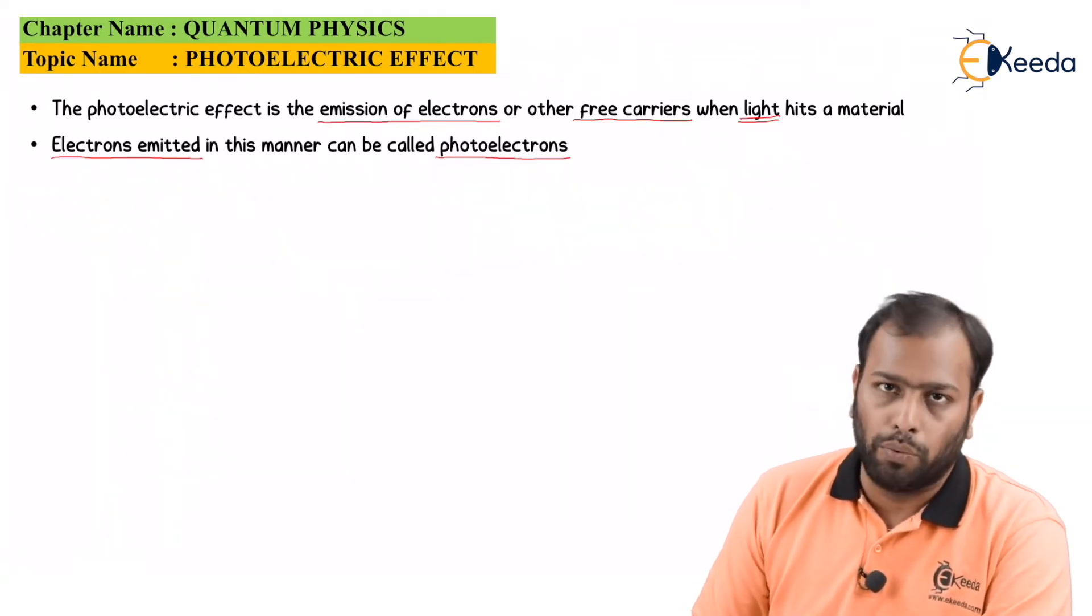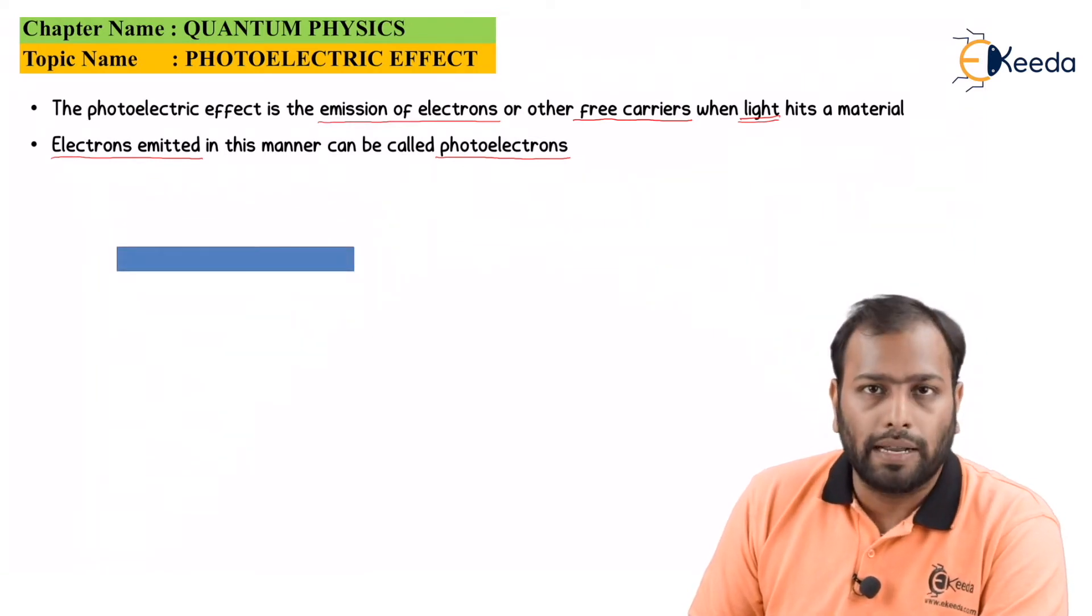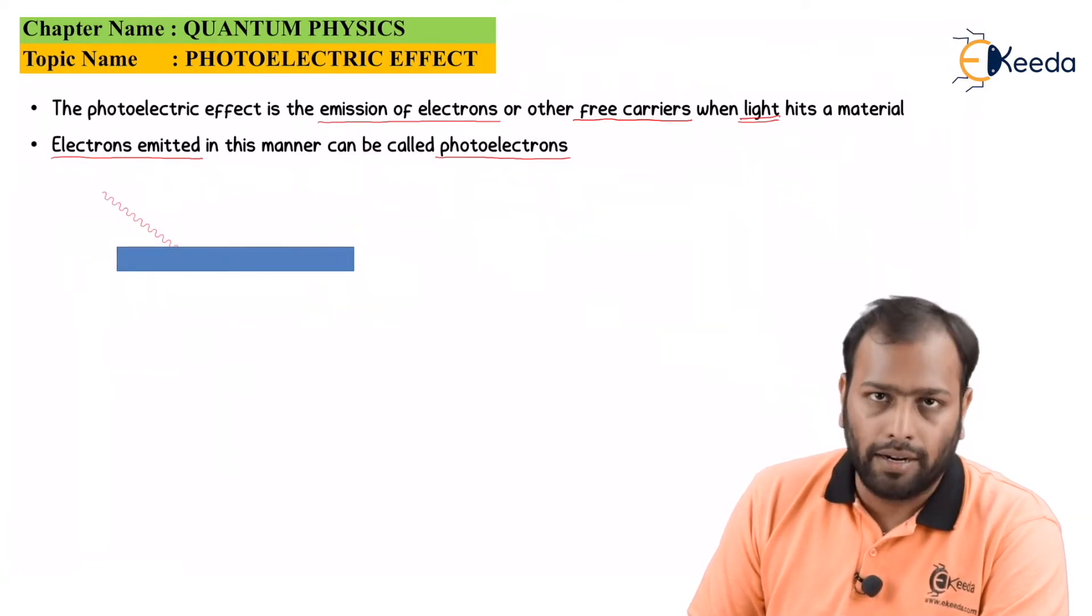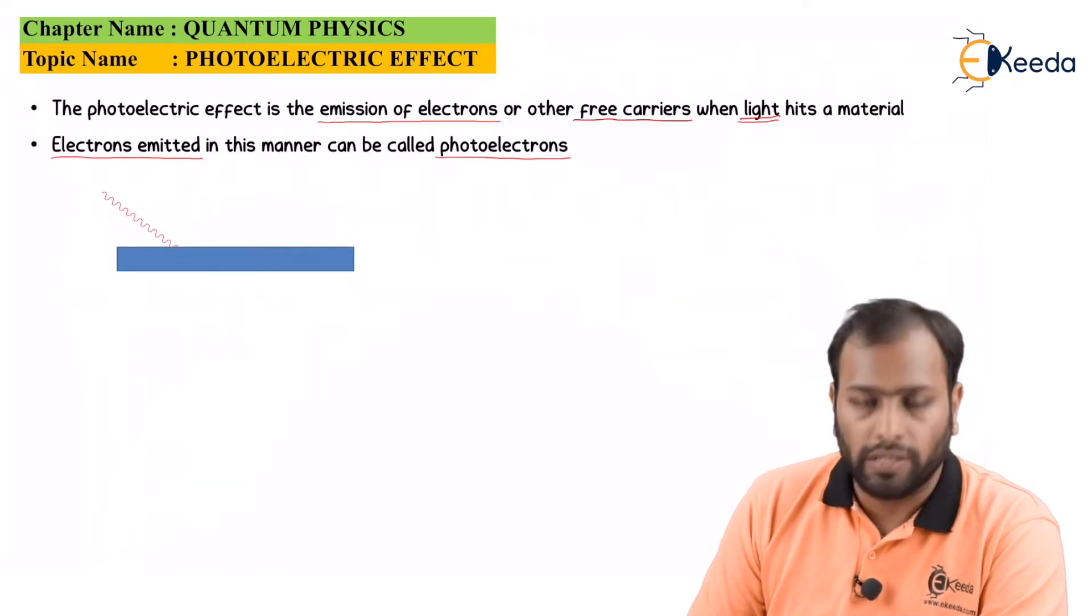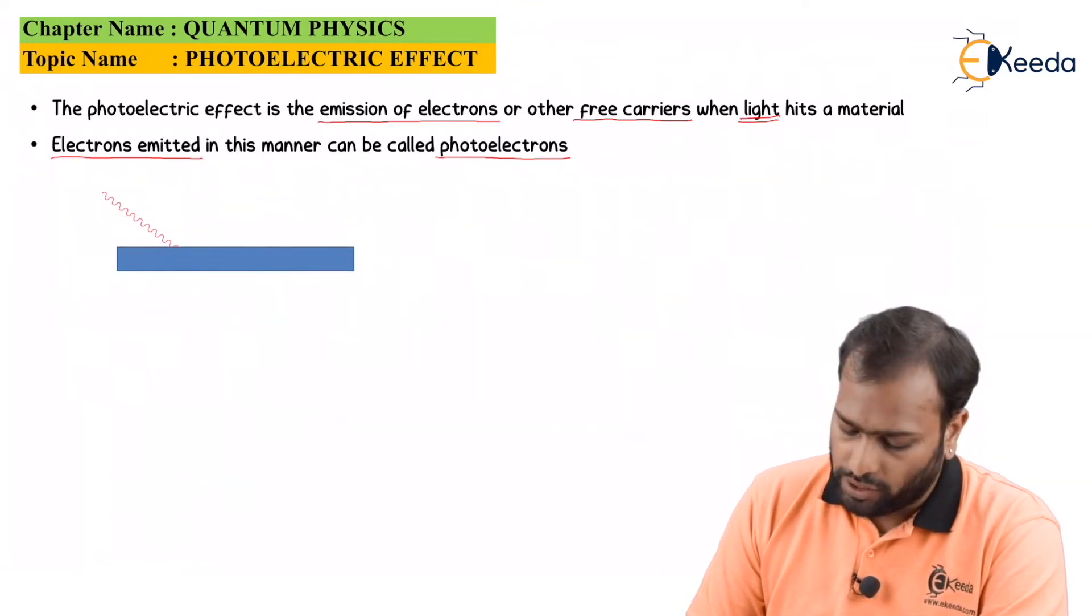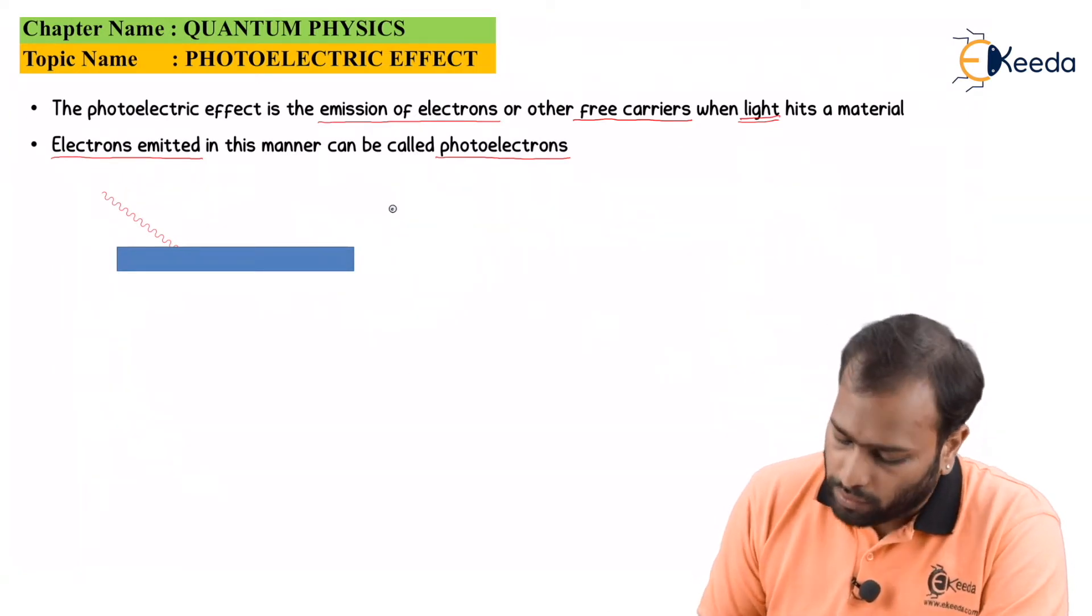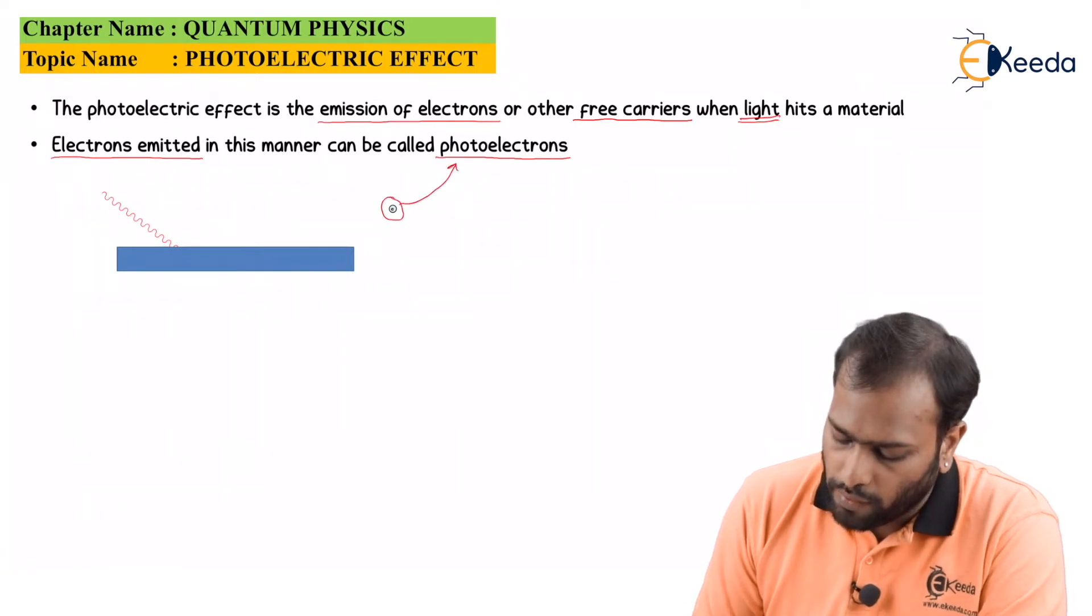Now let's see how it works. Let's consider a metallic surface and on this metallic surface, I will pass a radiation. Now, this radiation is nothing but energy by which I am trying to knock off an electron from the material surface. Now after the passage of energy, an electron will knock off from the surface and hence this electron is, as you studied earlier, a photoelectron.